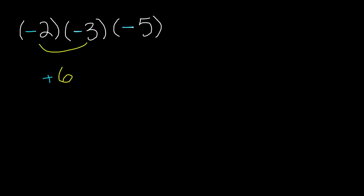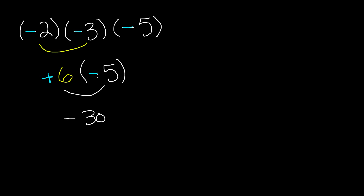Now we copy down the other integer, which is negative 5. So now we have to multiply 6 by negative 5. 6 times negative 5 gives us negative 30. Why? Because we are multiplying a positive number by a negative number — two different signs give a negative product. So we get negative 30 as our product, and that is how you multiply rational numbers. Thanks for watching, and we'll see you guys next time. Bye.